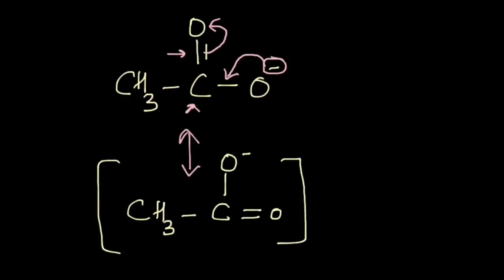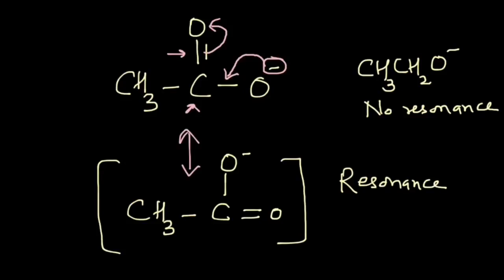So the first species has a resonating structure but the second species, that is CH3CH2O-, does not have resonance. And what we know is that resonance increases stability right. Resonance causes an increase in stability.